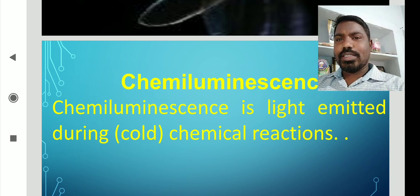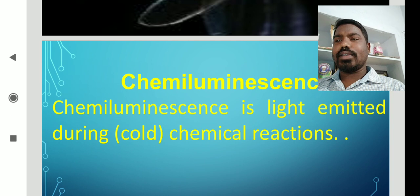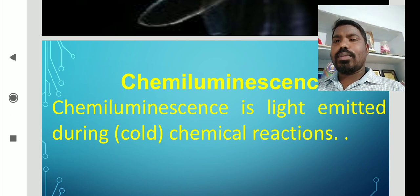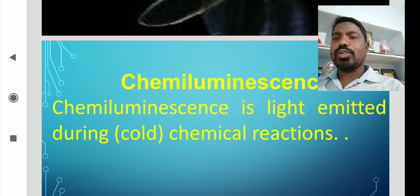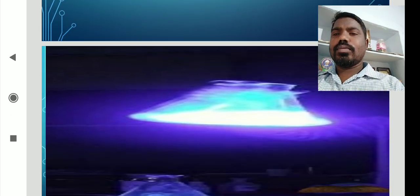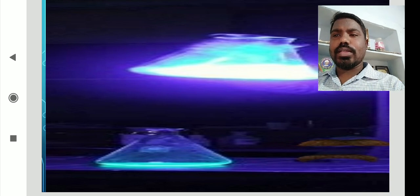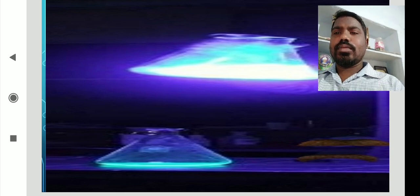Chemiluminescence is light emitted during a chemical reaction. The light produced because of a chemical reaction is called chemiluminescence. This is an example figure of chemiluminescence. That's it — thank you.